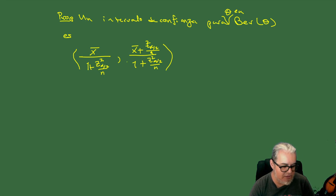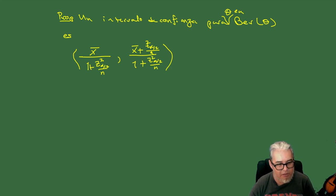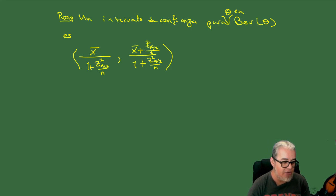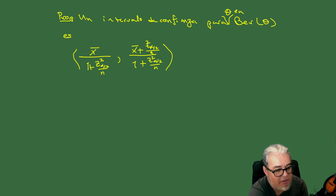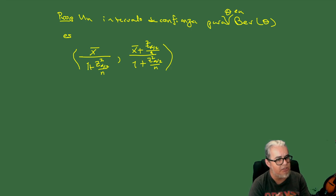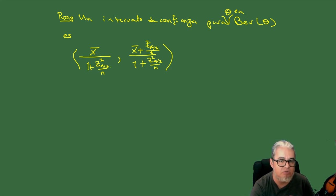Le vamos a parar aquí por hoy. En la siguiente sesión continuamos con la uniforme continua y la binomial. El jueves o viernes acabamos con la exponencial y la normal, y a ver si nos da tiempo esta semana de ver el caso general; si no, lo vemos el lunes de la próxima semana. Nos vemos en una siguiente sesión.